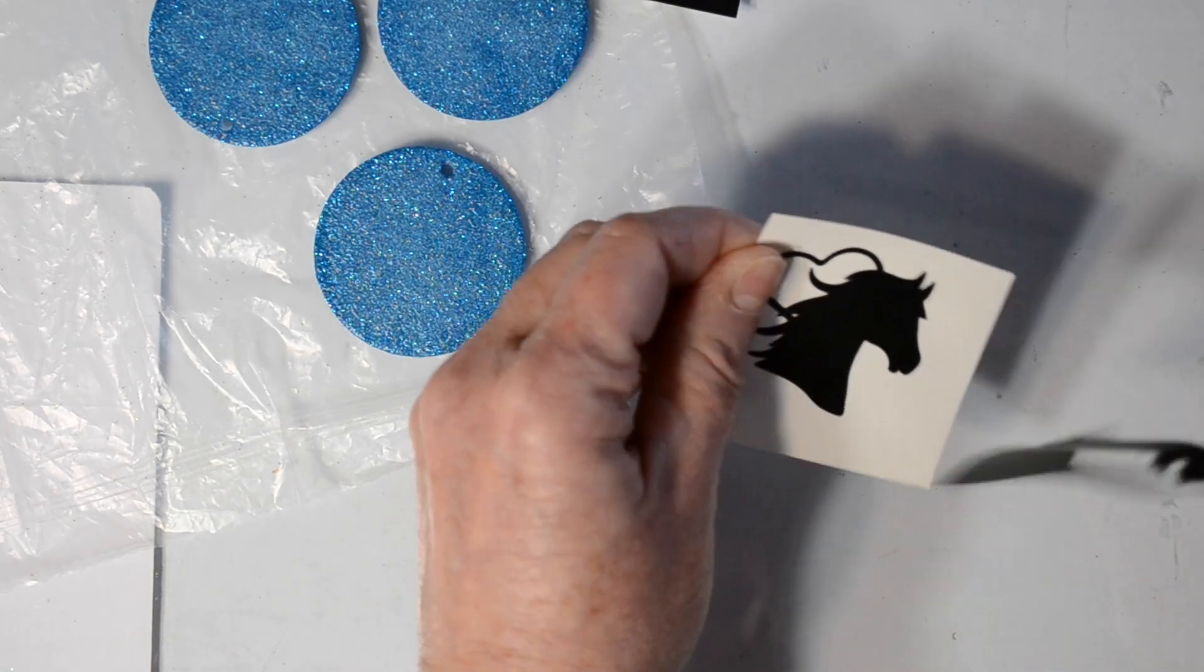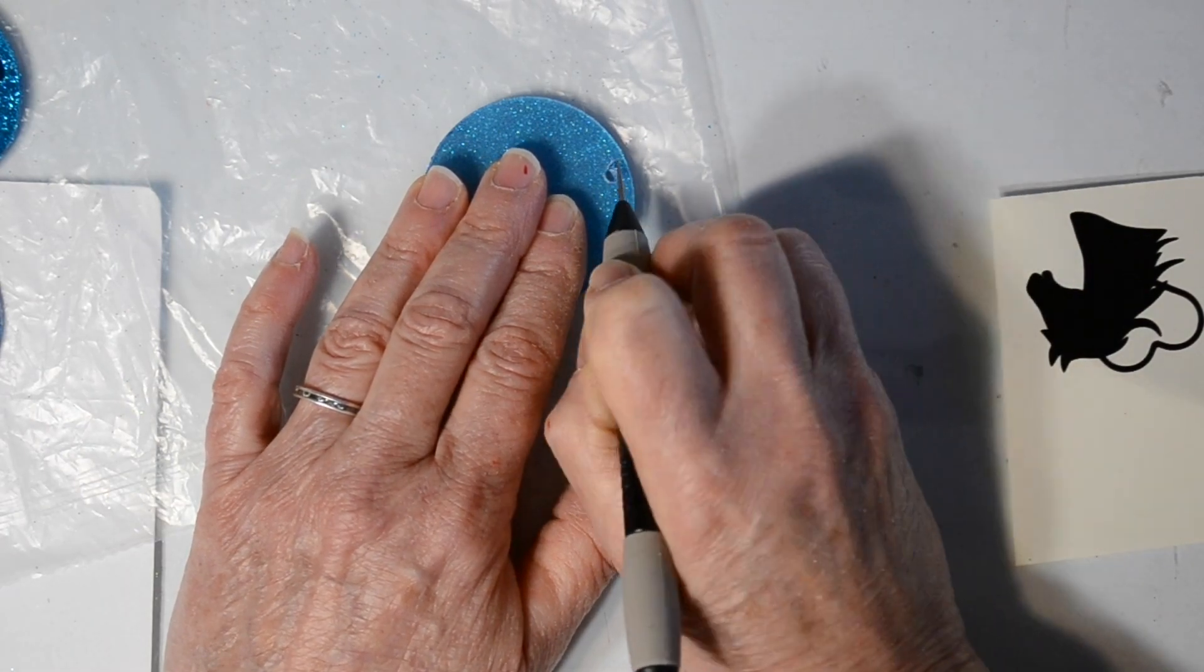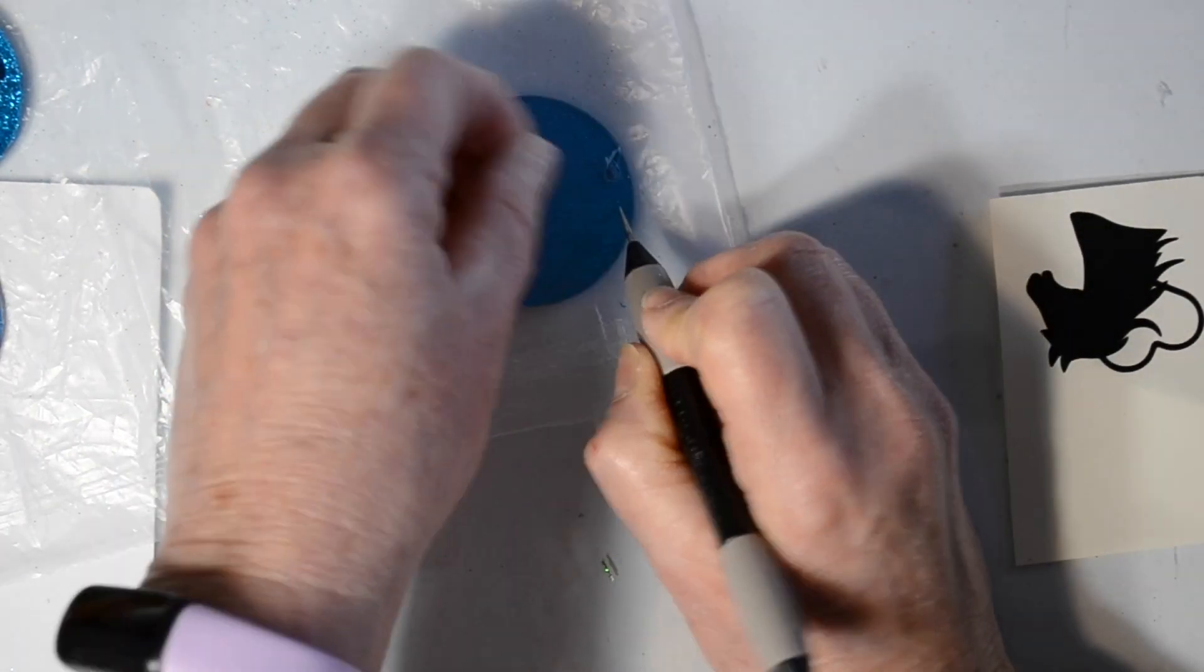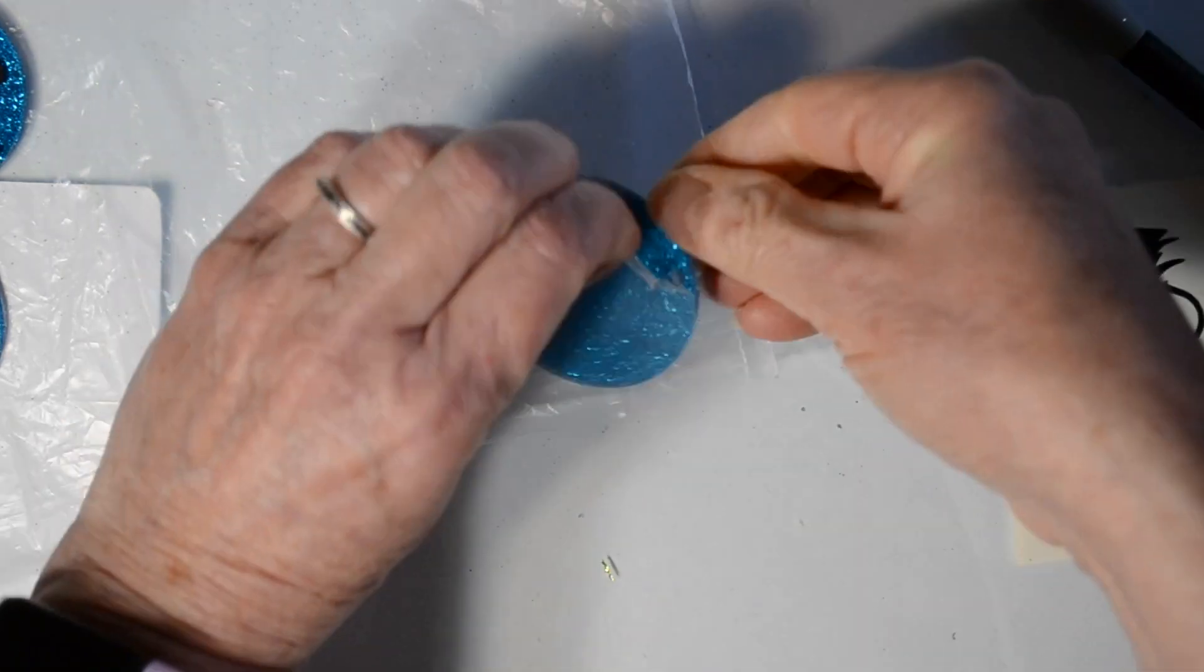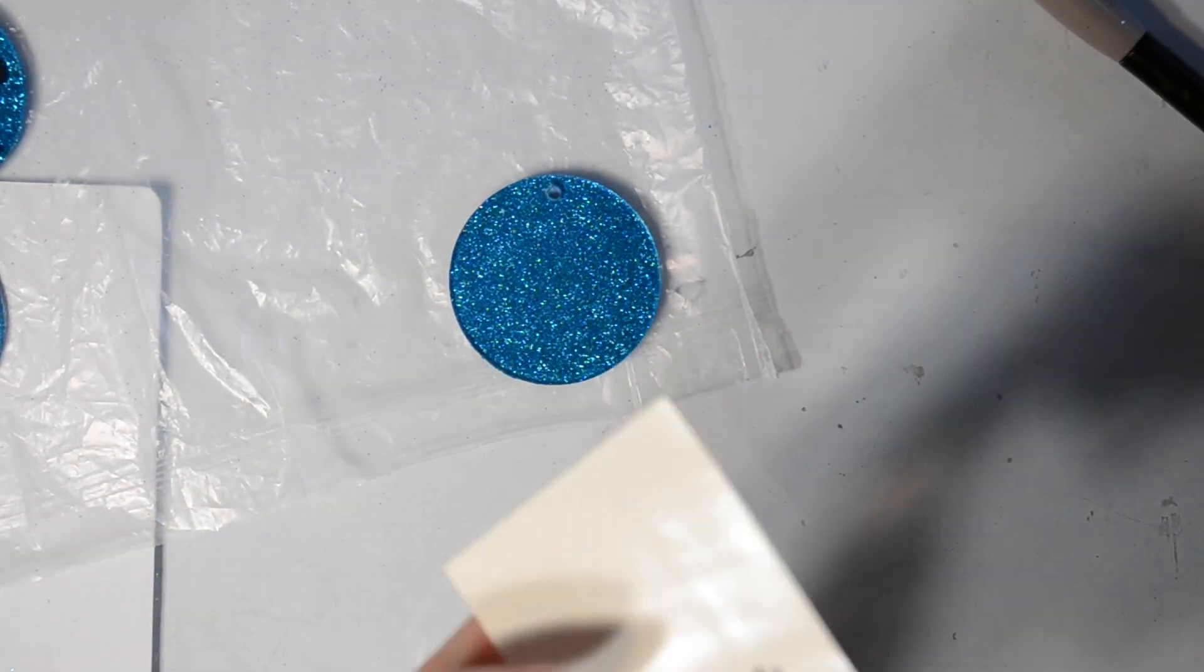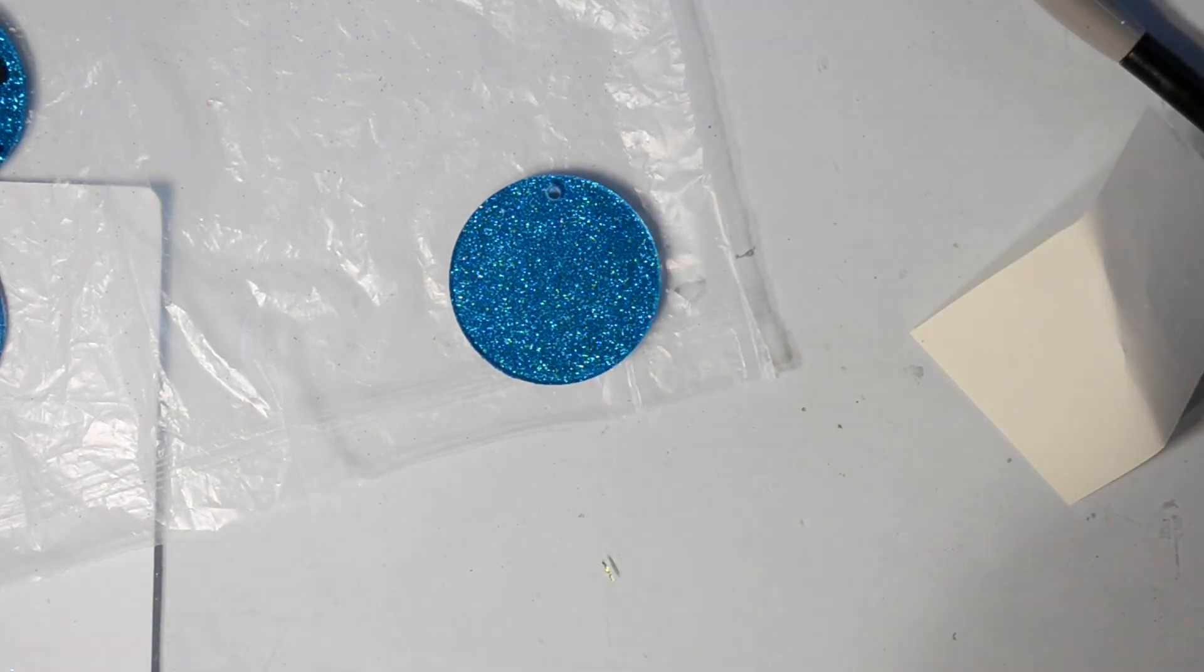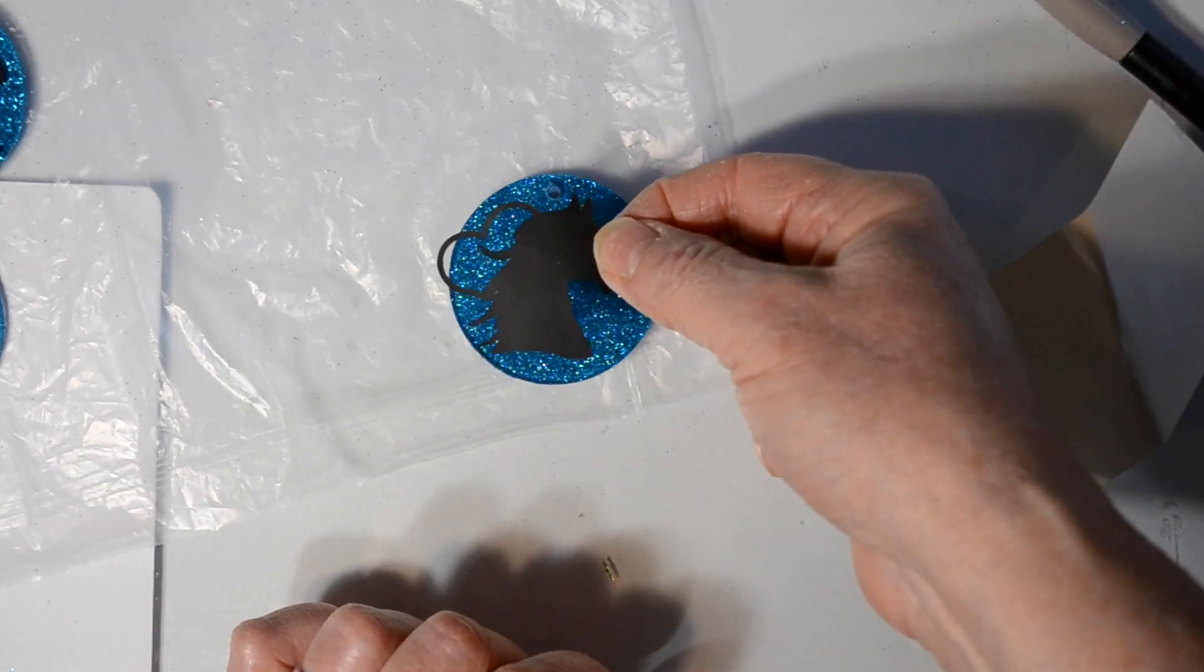I'm going to go ahead and weed away the bits of vinyl that we don't need and that leaves us just with our little silhouette. Again, I'm going to pick away at this liner to get it off. That really is the hardest part of this project. I picked away right there by where the keychain was going to go and that made it a little simpler.